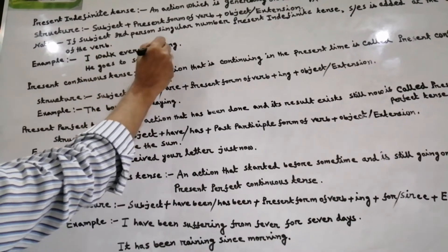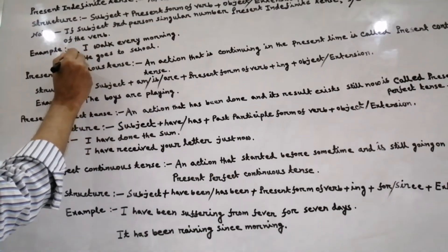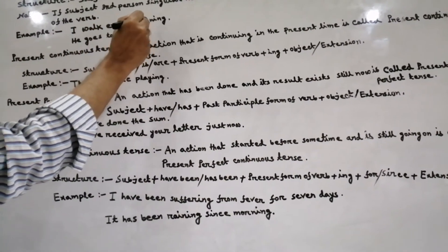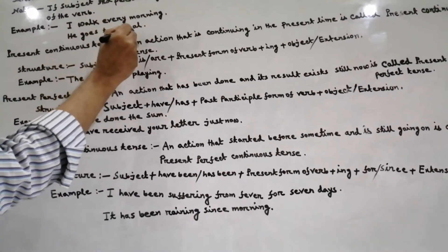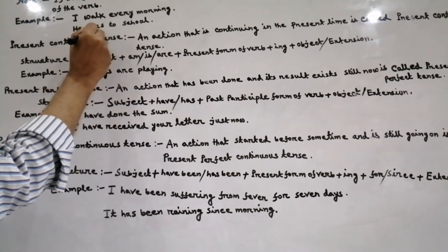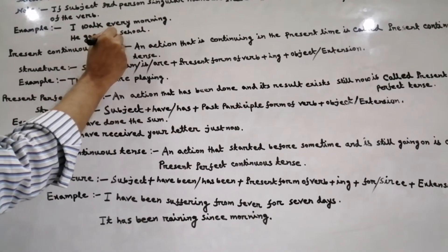Example: I work every morning. Here, I subject, present form of verb, every morning extension. He goes to school. Here, he subject, goes present form of verb, to school extension.